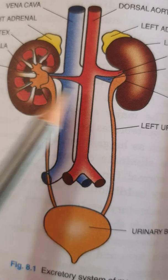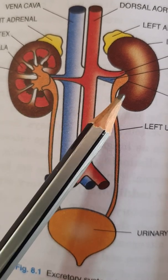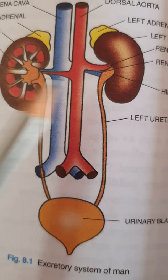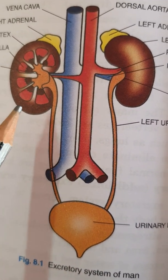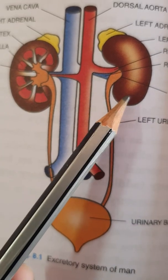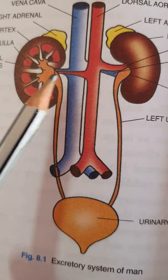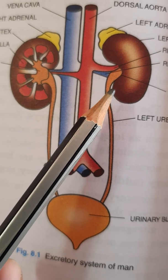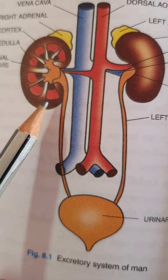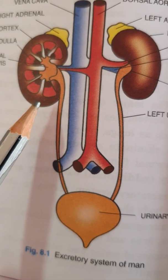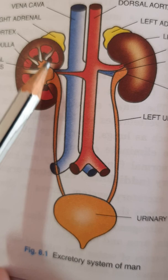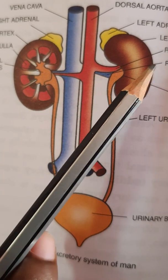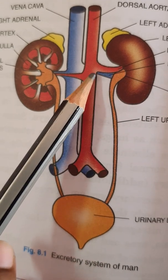These kidneys are present in the abdominal cavity on either side of the vertebral column. The last two pairs of ribs protect these two kidneys, and the kidneys are attached to the body wall.